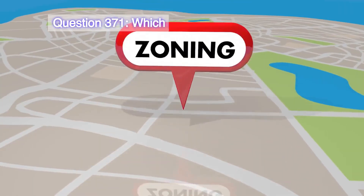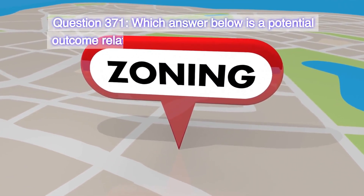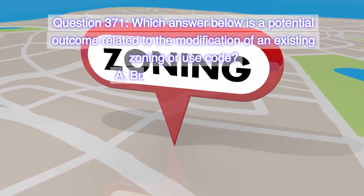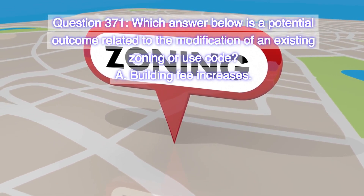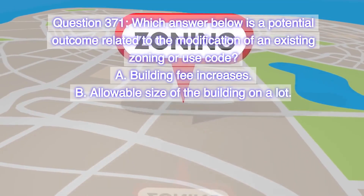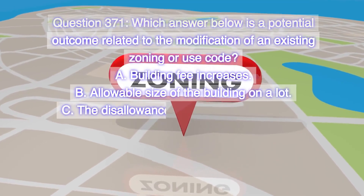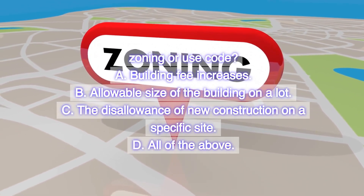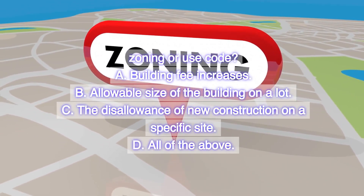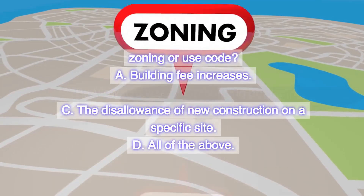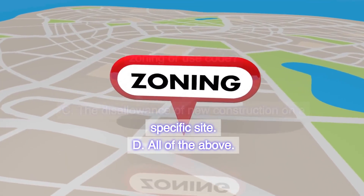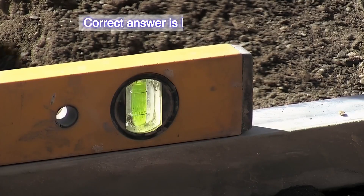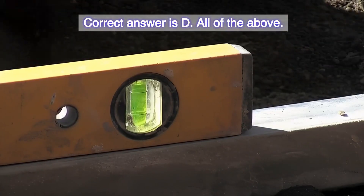Question 371. Which answer below is a potential outcome related to the modification of an existing zoning or use code? A. Building fee increases. B. Allowable size of the building on a lot. C. The disallowance of new construction on a specific site. D. All of the above. Correct answer is D. All of the above.